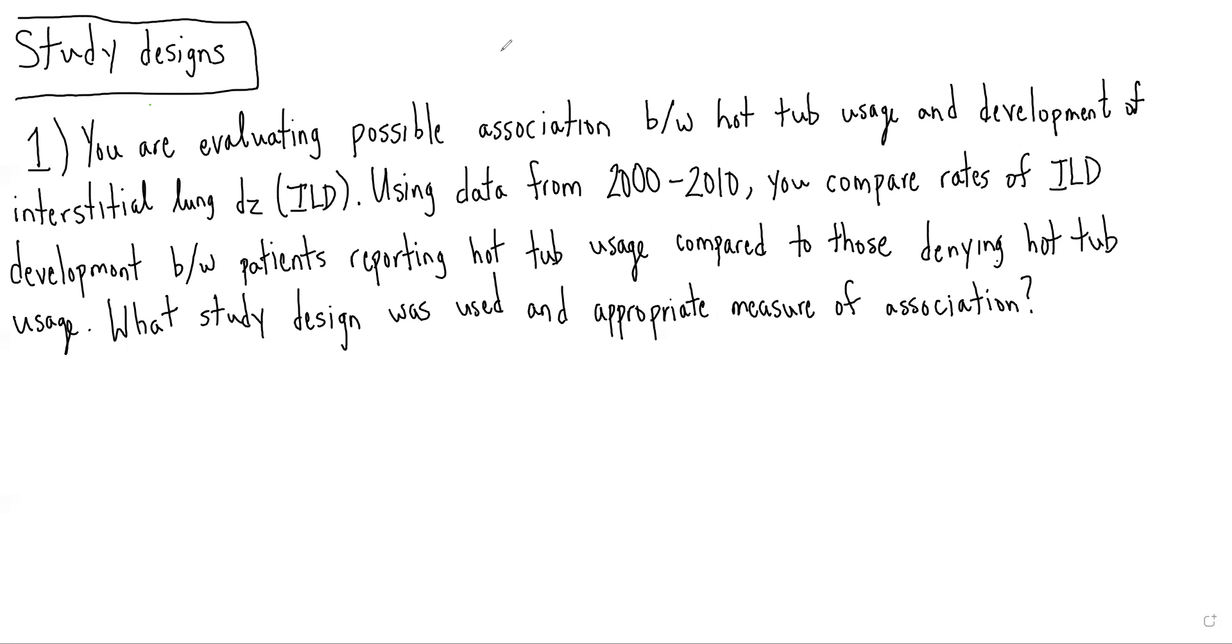Using the algorithm that we decided upon in the lecture, our first step would be to ask: are patients being assigned to groups? In this case, that can't be the case. Patients are not being assigned to groups. We're using data that was already available. So we know we're dealing with one of the observational study designs.